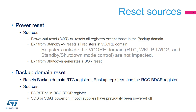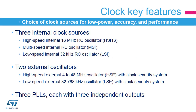The RCC offers a large choice of clock sources, which can be selected depending on low power, accuracy, and performance requirements. STM32L4 devices embed three internal clock sources: a high-speed internal 16 MHz RC oscillator, or HSI-16; a multi-speed internal RC oscillator, or MSI; and a low-speed internal 32 kHz RC oscillator, or LSI.